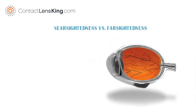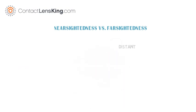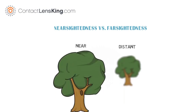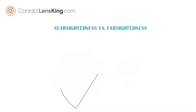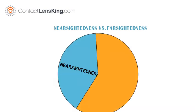Nearsightedness usually occurs when the shape of the eye, or cornea, causes light rays to focus in front of the retina instead of on it. This short focal point causes distant objects to seem blurry, and near objects to be clear. Nearsightedness currently affects approximately 40% of Americans.